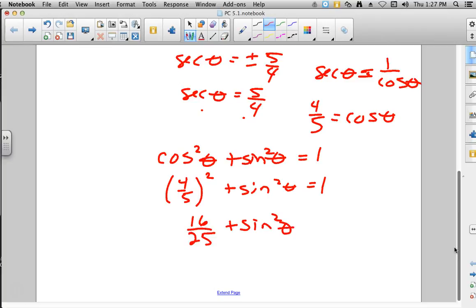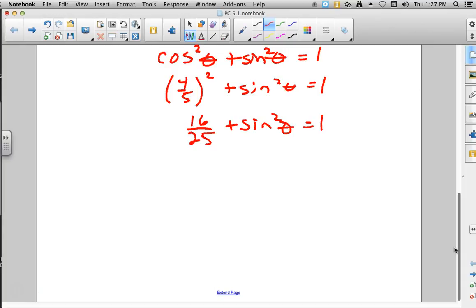And then we'll just keep working with solving. So we would subtract 16/25 from both sides. So sine squared theta is going to equal 9/25, and take the square root. And again, we know that we're talking about the side length of a triangle, so we're just going to go ahead and go with the positive answer there, that would be 3/5.